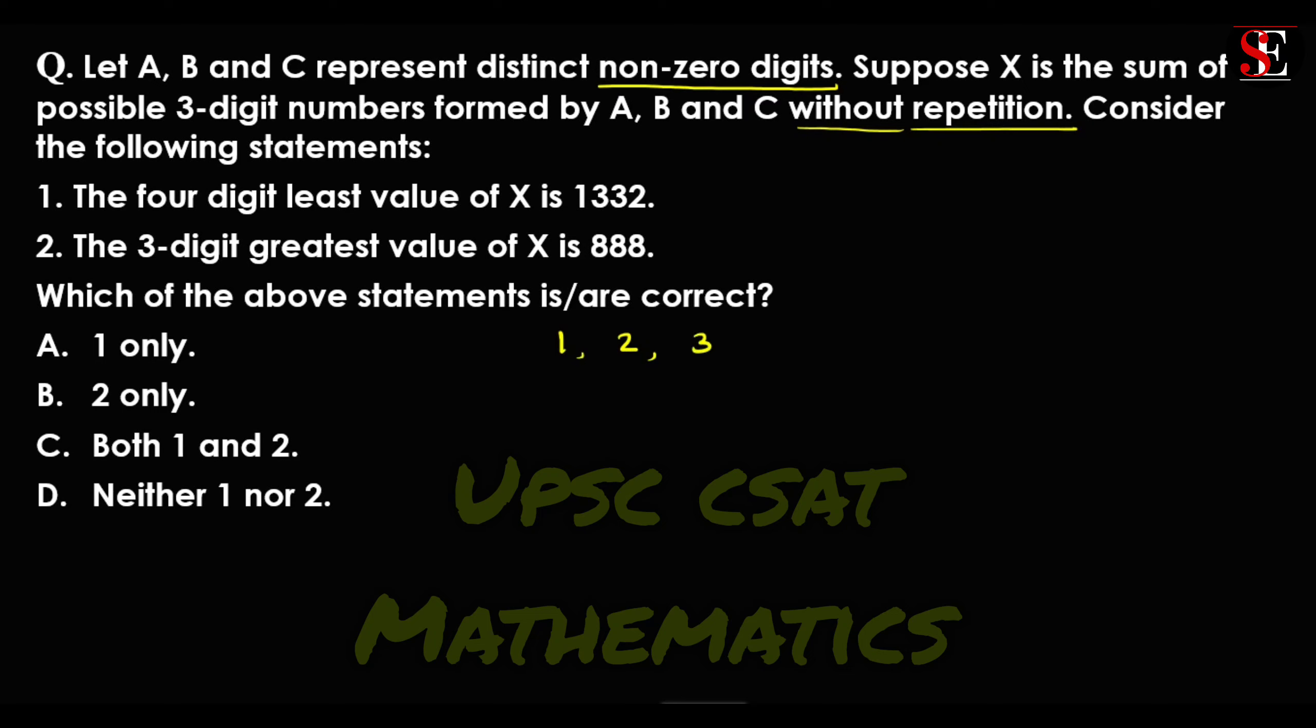The digits we will use are 1, 2, 3, 4, 5, 6, 7, 8, and 9. For three-digit numbers without repetition, when one number is in place A, then B place has 2 possibilities with 2 digits remaining, and C place will have 1 digit. In this way, the total numbers you can write are 6.